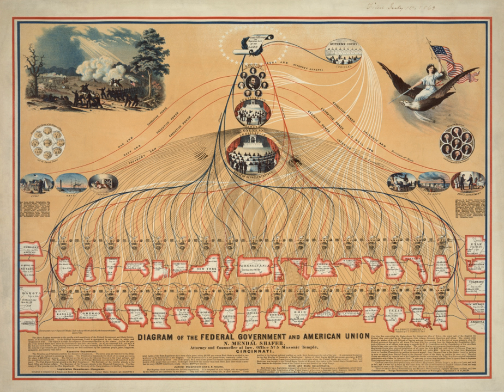Conversely, a federal district court hearing a matter involving only a question of state law — usually through diversity jurisdiction — must apply the substantive law of the state in which the court sits, a result of the application of the Erie Doctrine. However, at the same time, the case is heard under the federal rules of civil procedure, the federal rules of criminal procedure and the federal rules of evidence instead of state procedural rules. That is, the application of the Erie Doctrine only extends to a requirement that a federal court asserting diversity jurisdiction apply substantive state law, but not procedural state law, which may be different. Together, the laws of the federal and state governments form U.S. law.